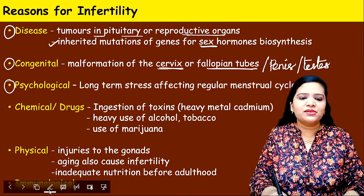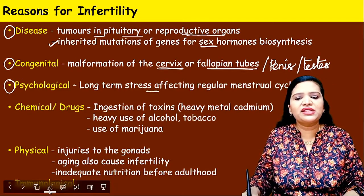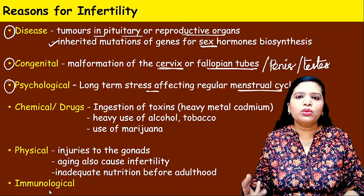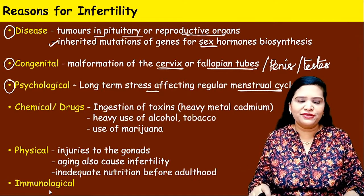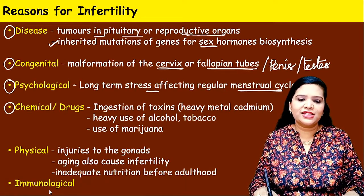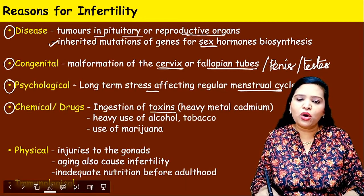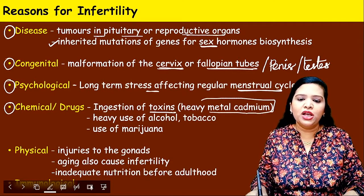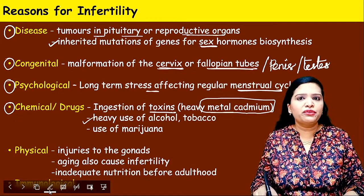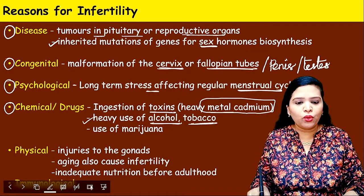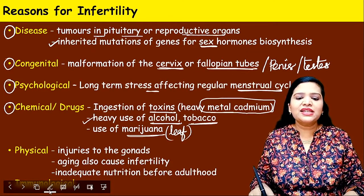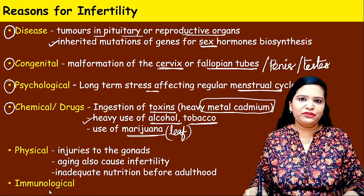Psychological reasons: long-term stress affects the regular menstrual cycle. If the menstrual cycle is not regular, ovulation won't occur properly, which affects fertility. The next reason is usage of certain chemicals or drugs — for example, accidental ingestion of toxins, particularly heavy metals like cadmium, which affects fertility. Heavy use of drugs like alcohol, tobacco, and marijuana may also lead to infertility.